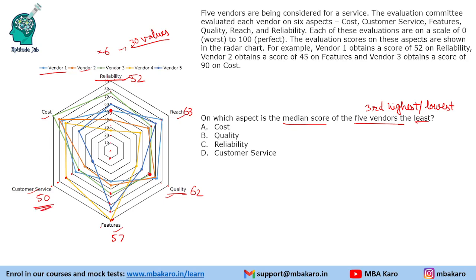Since we need the least median, the least is clearly in customer service — it is close to 80, somewhere around 78 or 79. We could have alternatively checked only reliability, customer service, quality, and cost — it was not even necessary to check all six parameters. The key is to just observe and answer instead of calculating all values.